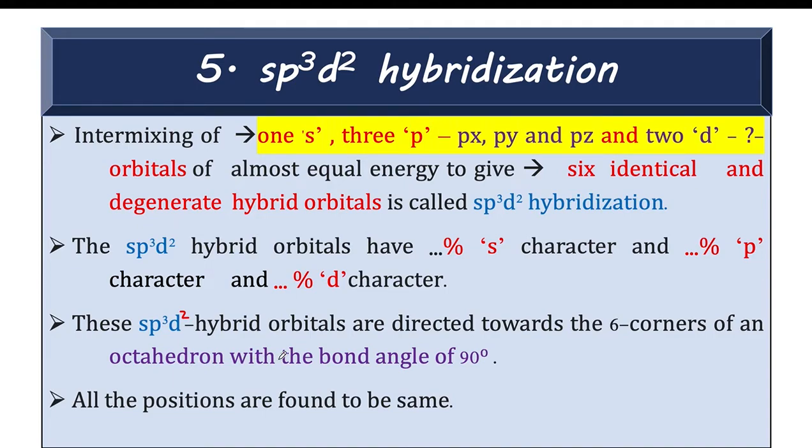Now here all the positions are found to be same. Unlike sp³d where there were 2 non-equivalent hybrid orbitals formed with different positions. But in case of sp³d² all the positions are found to be same and hence the bond angle is only 1, that is 90 degree bond angle between all the hybrid orbitals.